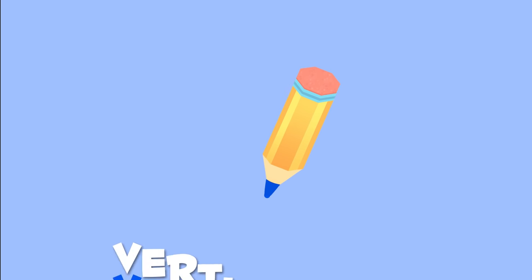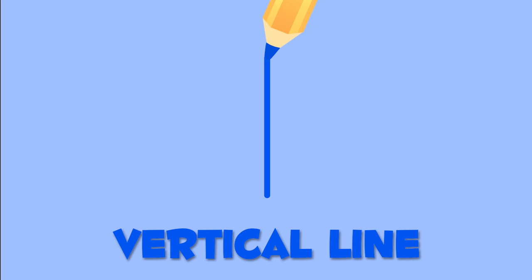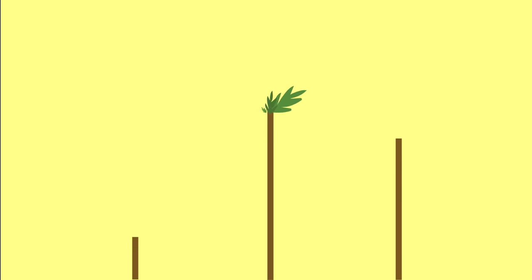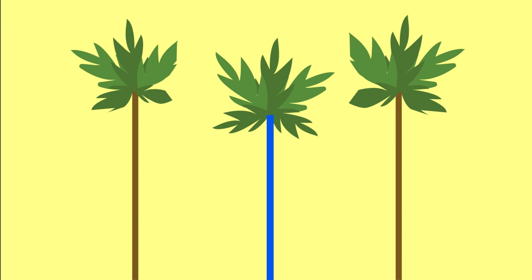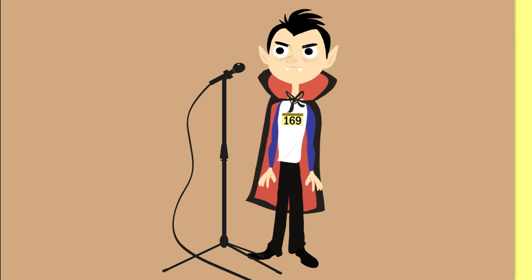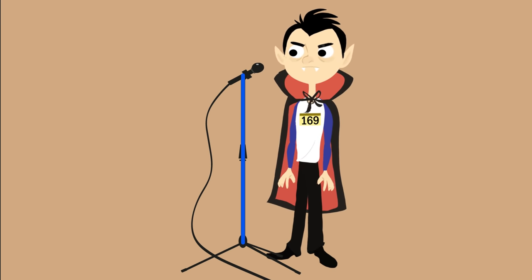Now this is a vertical line. Vertical lines look like the trunk of this palm tree or like this microphone stand.